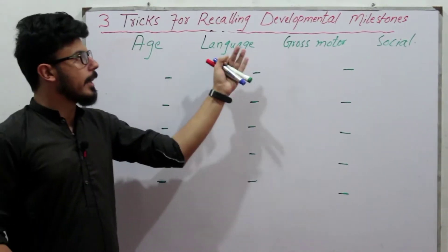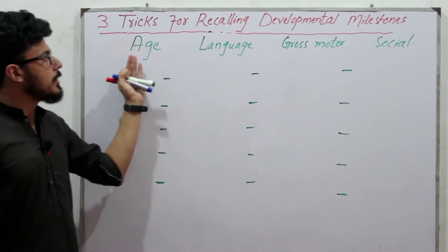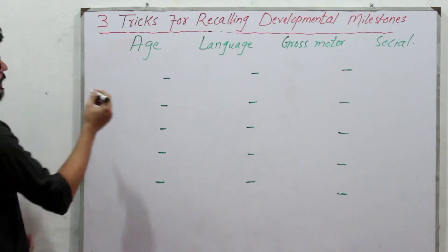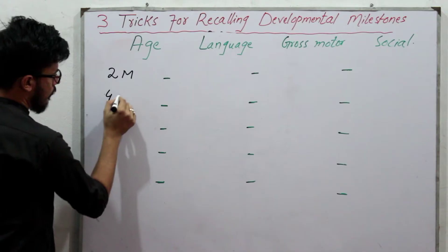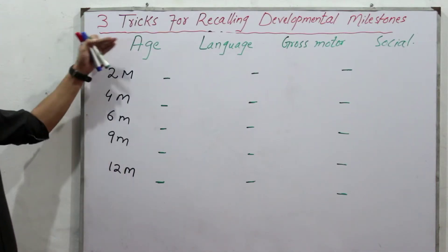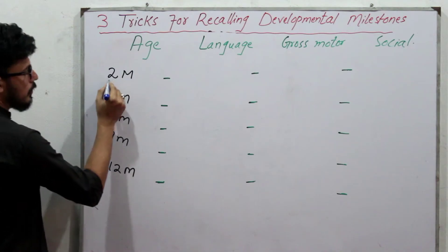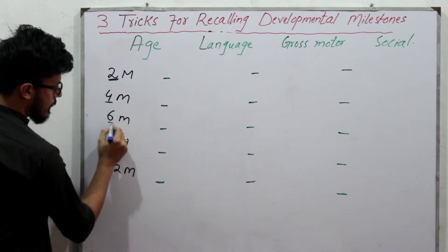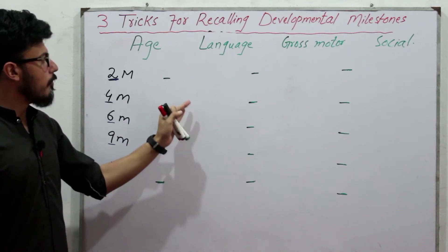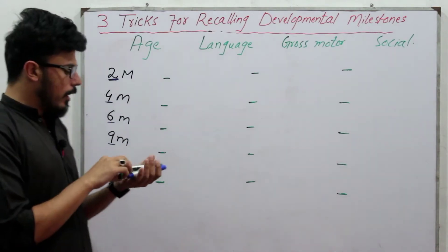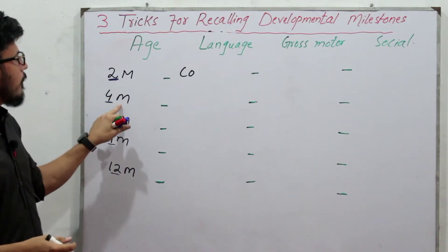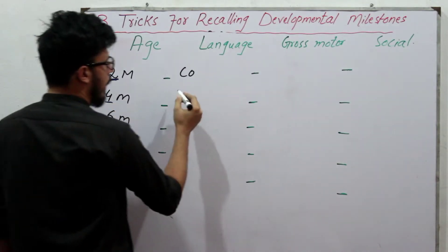For the second trick, we have categories: age, language, gross motor, and social adaptive. Focus on the age category: two months, four months, six months, nine months, and twelve months. In the language category at two months, there is 'coo' — meaning smiling and responding to touch or voice. At four months, a normal baby can laugh.